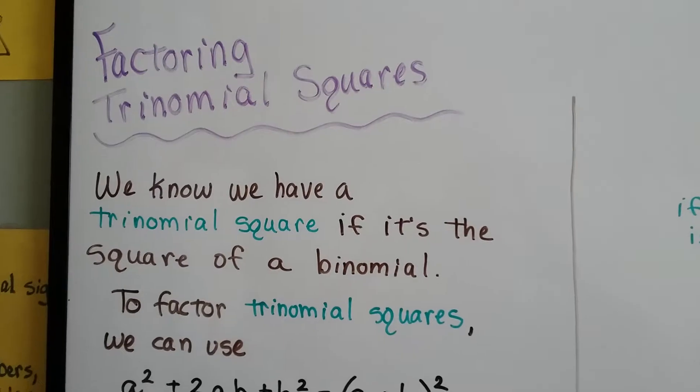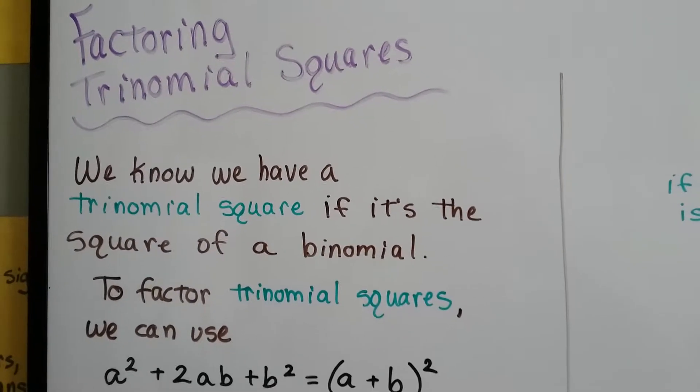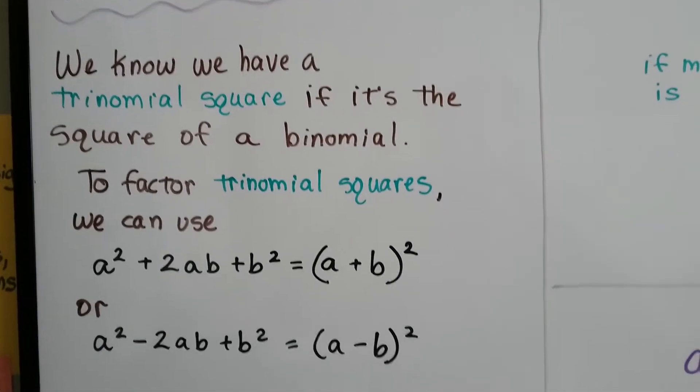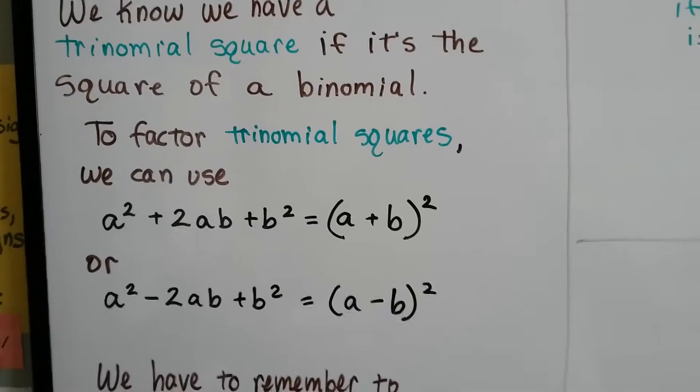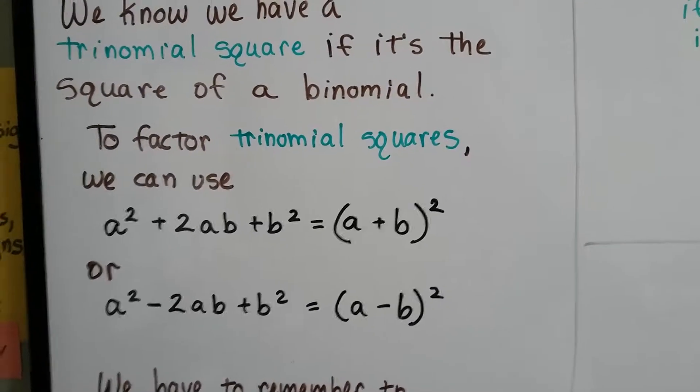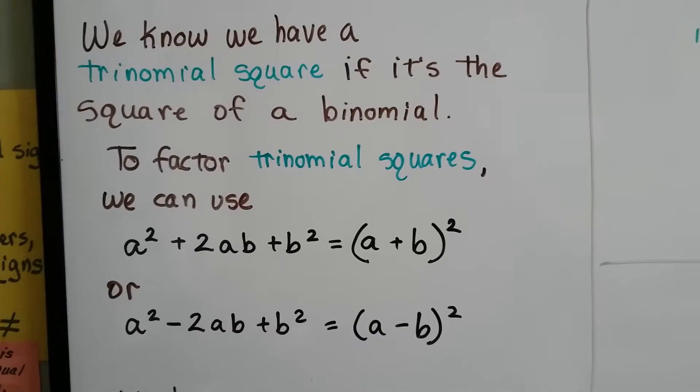We know we have a trinomial square if it's the square of a binomial. We learned that in the last couple videos. And to factor trinomial squares, we can use this template, this formula. a² + 2ab + b² is going to equal the square of the binomial (a + b)².